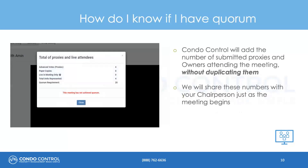How do I know if I have quorum? CondoControl will add the number of submitted proxies and owners attending the meeting without duplicating them. We will share these numbers with the chairperson just as the meeting begins.